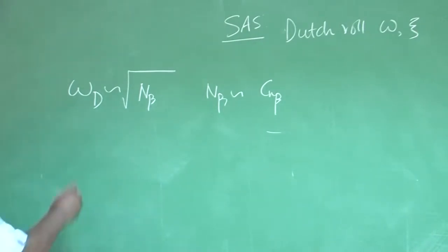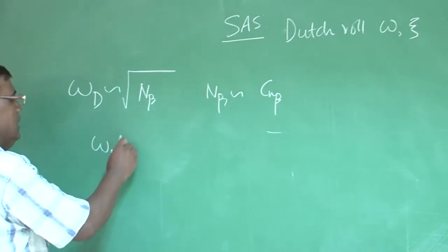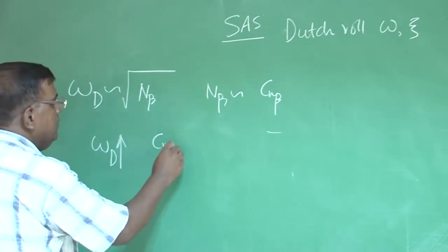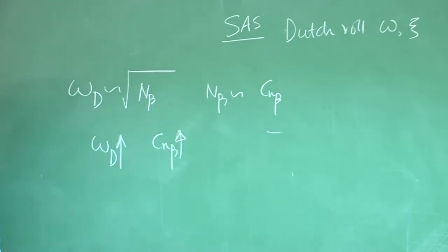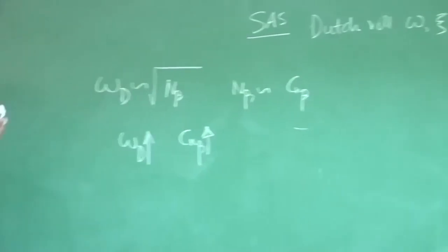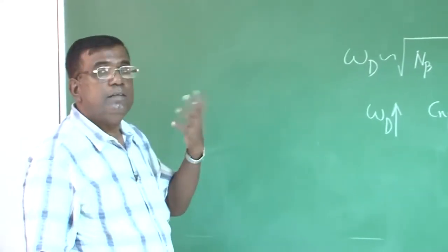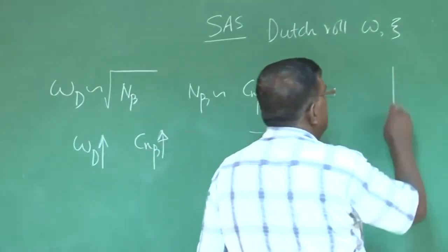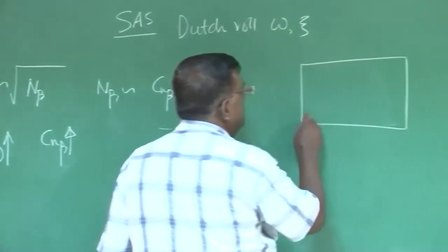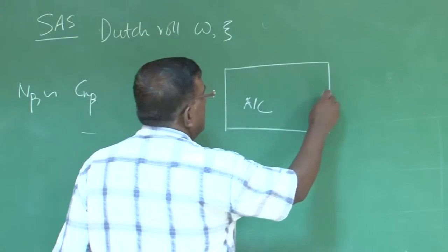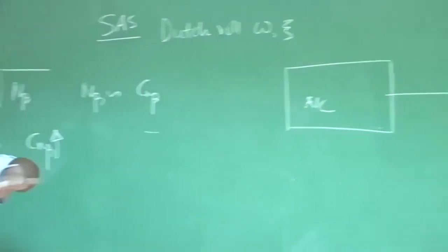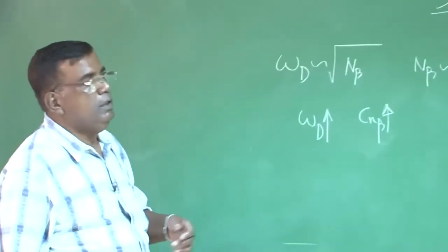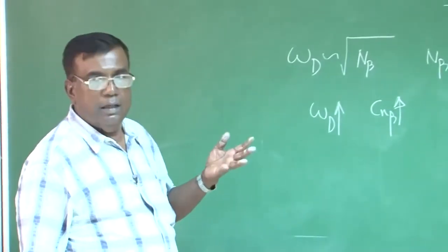So, if I want to increase omega dutch roll, that means I have to increase c n beta. Remember for longitudinal natural frequency, we have to increase the c m alpha. So, what should be the logic here? You have the airplane and all this yawing motion, we are attributing authority to the rudder.